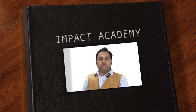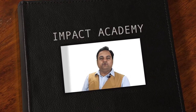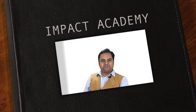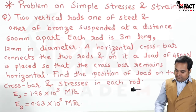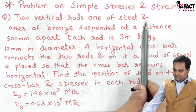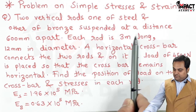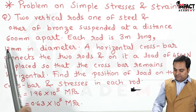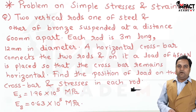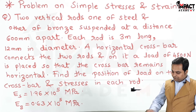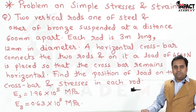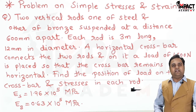Hi friends, in this video we are going to see a problem on simple stresses and strain. Here is the question: two vertical rods, one of steel and other of bronze, suspended at a distance of 600 mm apart. Two rods are given; the distance between them is given. The diagram is not given in the problem, so we have to draw it on our own.